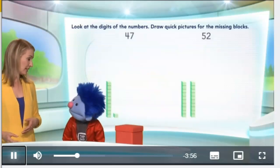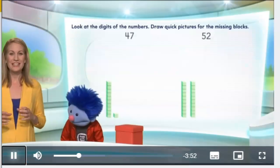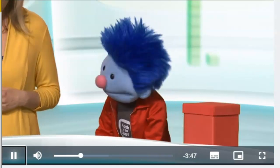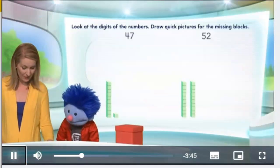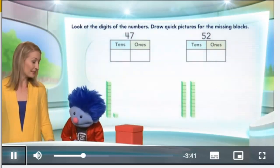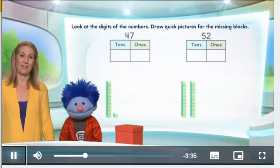Lines that show tens and circles that show ones. So we are going to fill in the missing blocks. I see. So let's start with the number 47. Let's take a look at the tens and the ones of 47. So how many tens are there in 47?